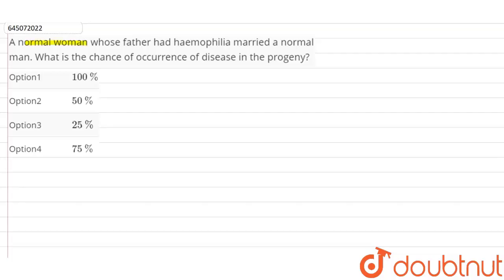In this question they are saying a normal woman whose father had haemophilia married a normal man. Now we have to give the chance of this disease in the progeny of such a marriage.